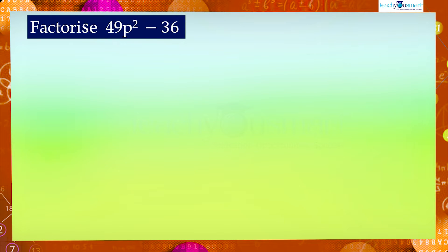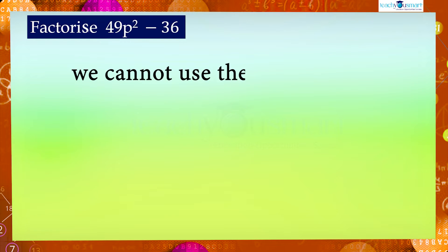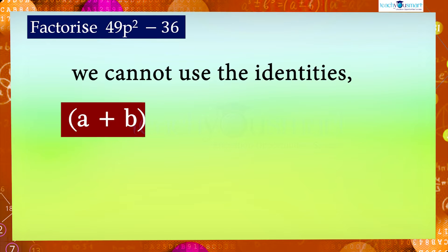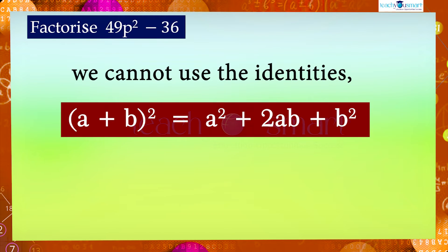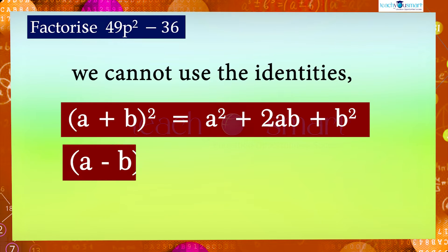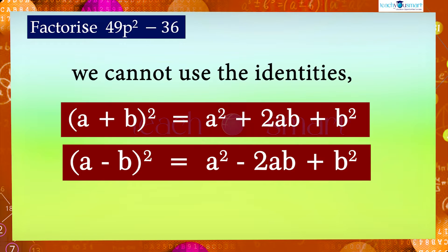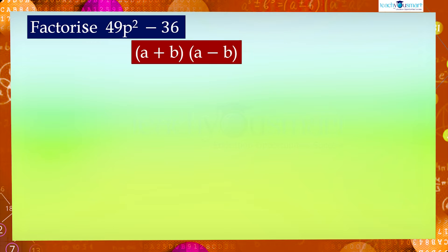Let's see the algebraic expression 49p square minus 36. We have to factorize this expression. Since the given expression has only two terms, we cannot use the identities (a+b)² = a²+2ab+b² or (a-b)² = a²-2ab+b². Here we can use the identity a plus b multiplied by a minus b equals a square minus b square.